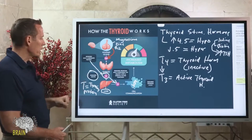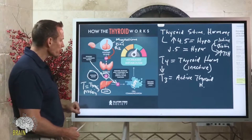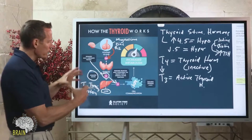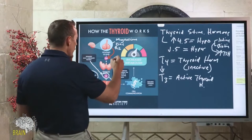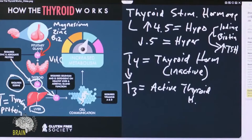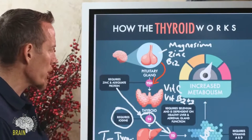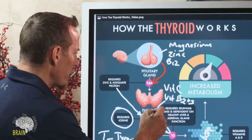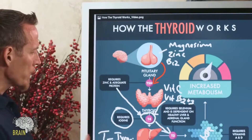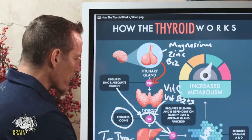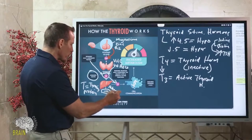Getting adequate iodine requires healthy quantities of kelp, seafood, fish, and seaweed. To make T4, you also need vitamin C and B vitamins — particularly B2 and B3 — which help transport iodine into the area of the thyroid gland where T4 is produced.